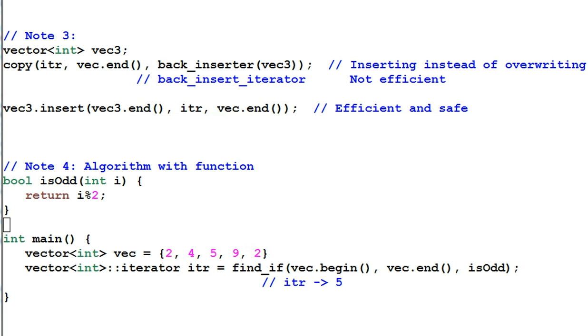Note 4. Algorithms work very well with functions. Here I define a function isOdd which tests if an integer is an odd integer. And then I can use find_if to find the item in vector that satisfies the condition of isOdd. So in the end, iter is pointing to 5.